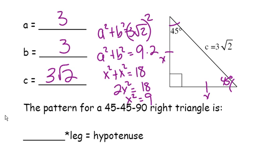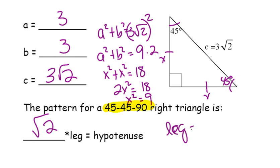Every single time that we've done this, our pattern has been that the two legs are the same length, and the hypotenuse is radical 2 times the leg. So that is the pattern for a 45-45-90 right triangle. That is what I want you to memorize: both legs are X, and the hypotenuse is X radical 2.